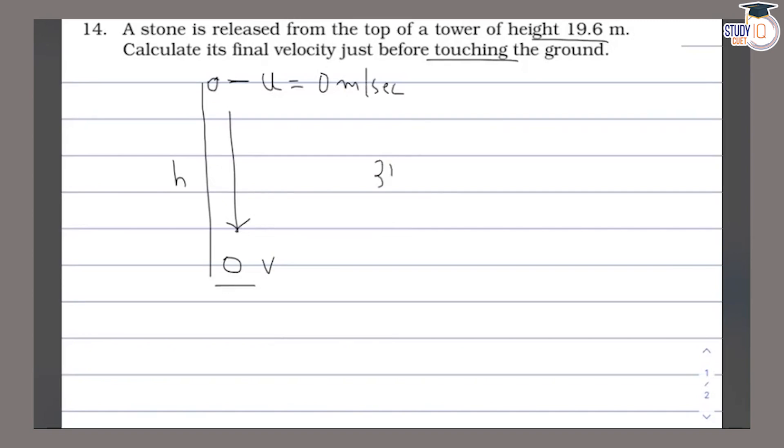When the stone falls down, the initial velocity is 0 meters per second. We have to find the velocity, so we will use the third equation of motion.